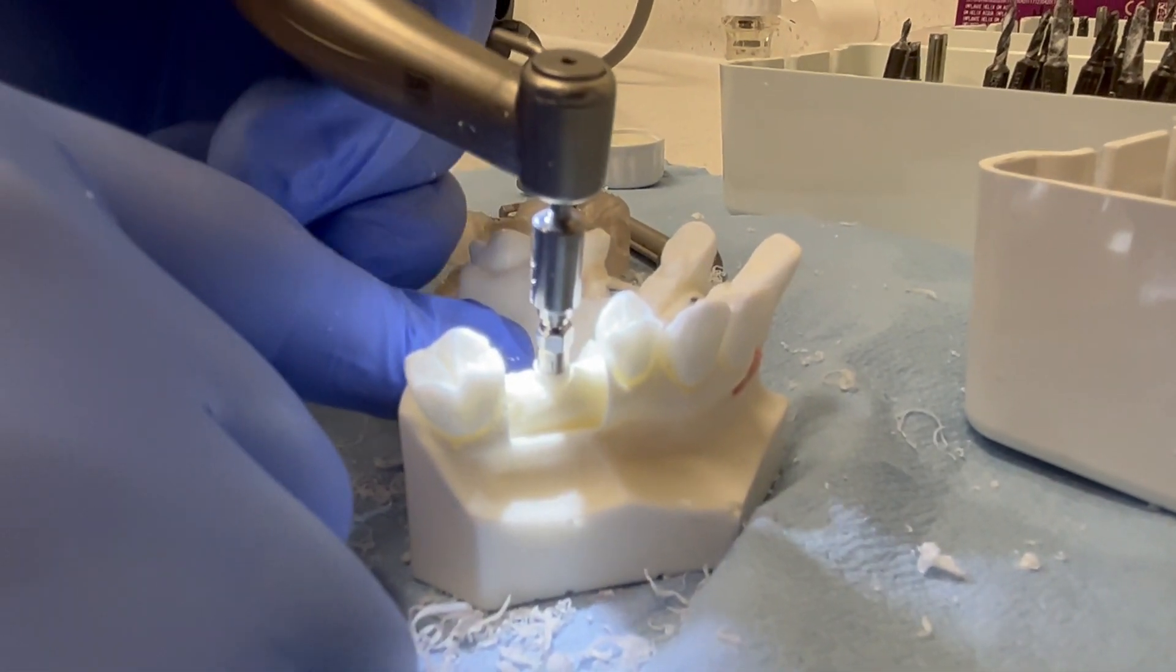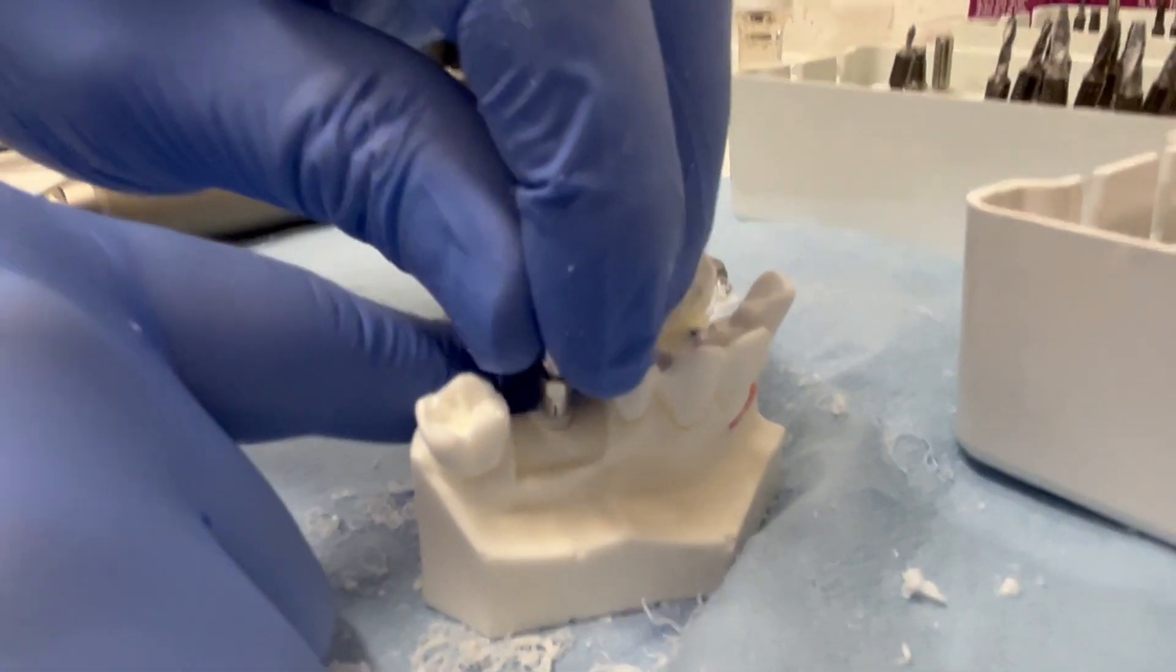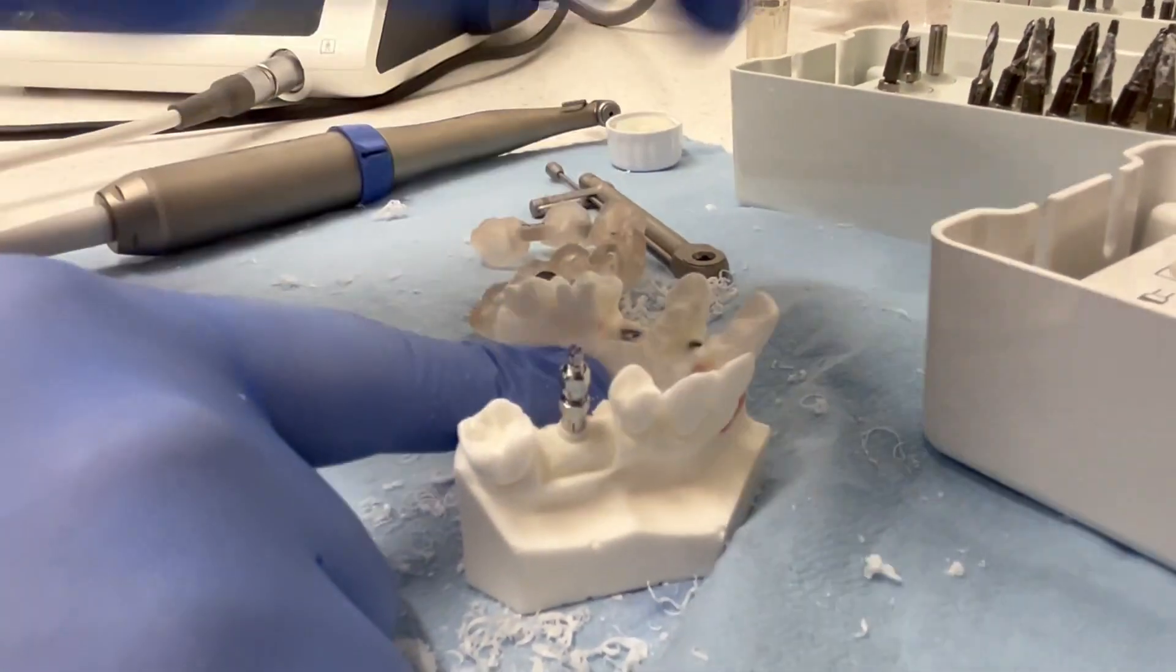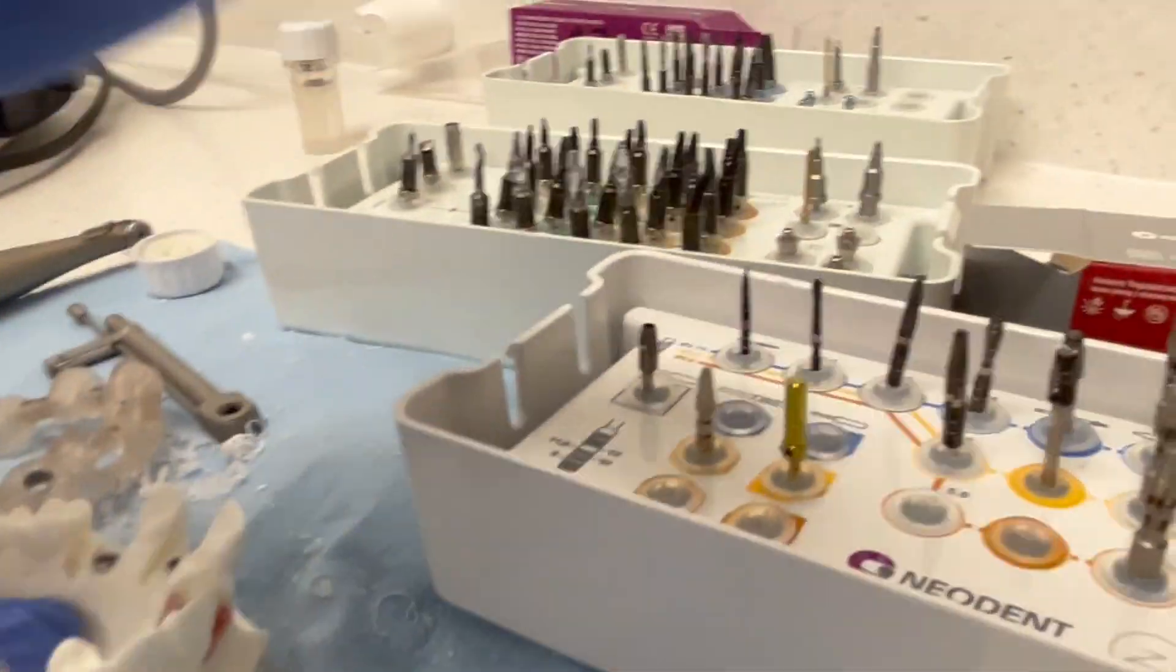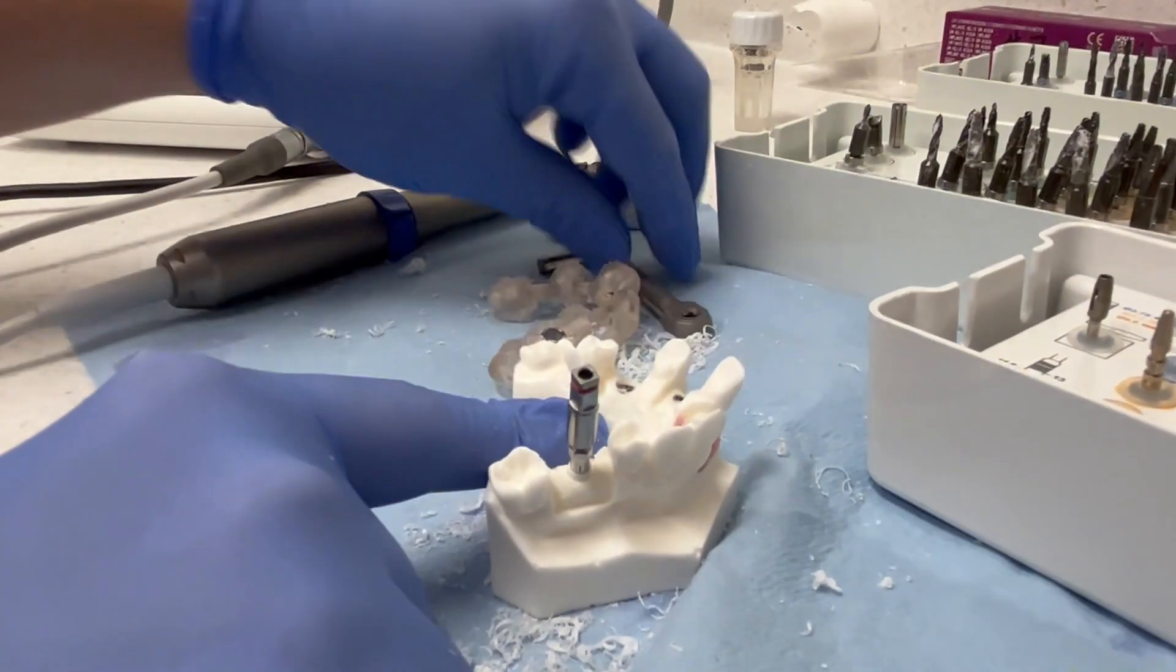So there you can see we're already at 35 newtons. We have about a millimeter and a half, two millimeters to go. So at this point, I'm going to keep this mount on. I'm going to change to our ratchet driver until it's fully engaged.